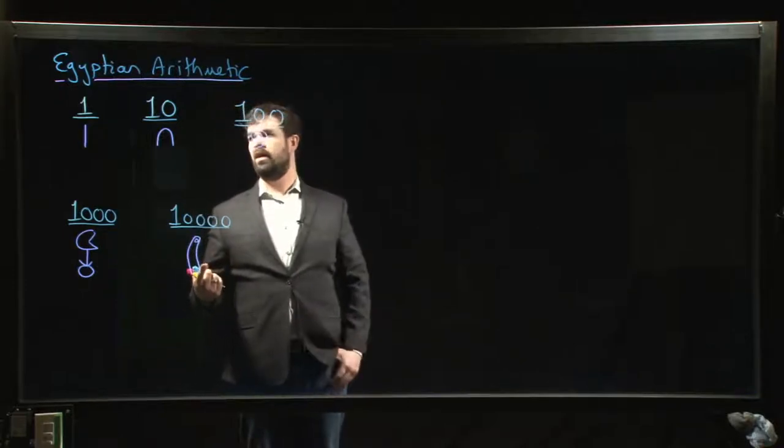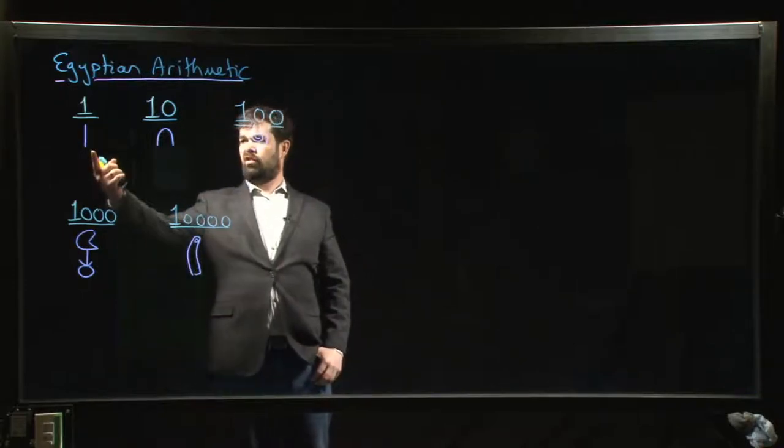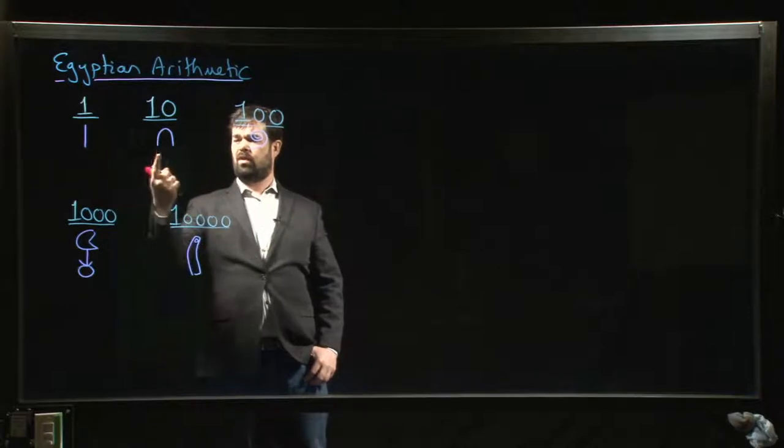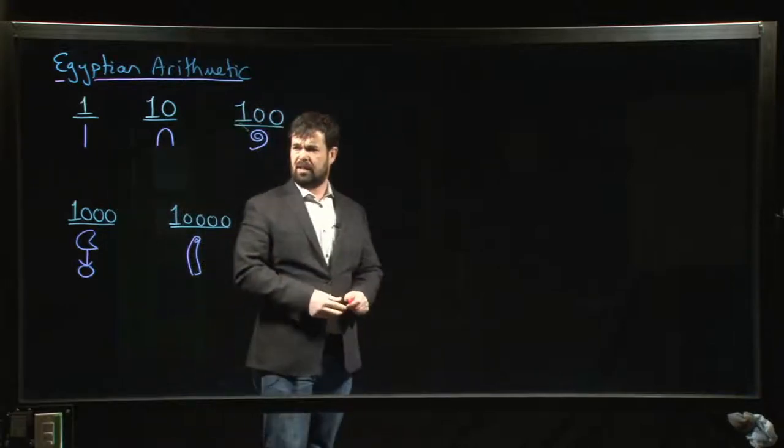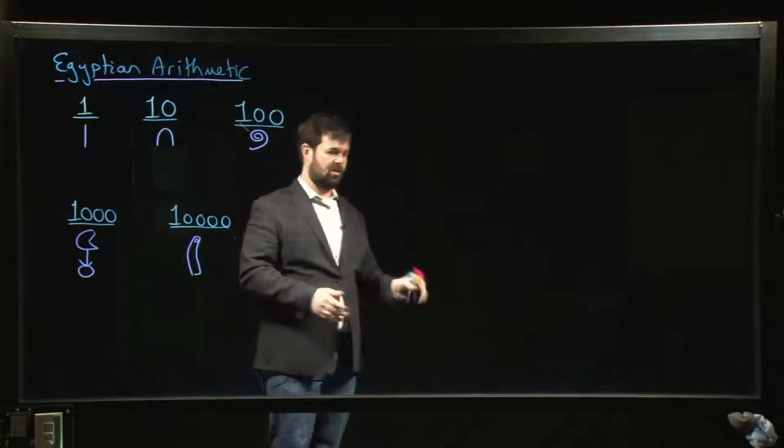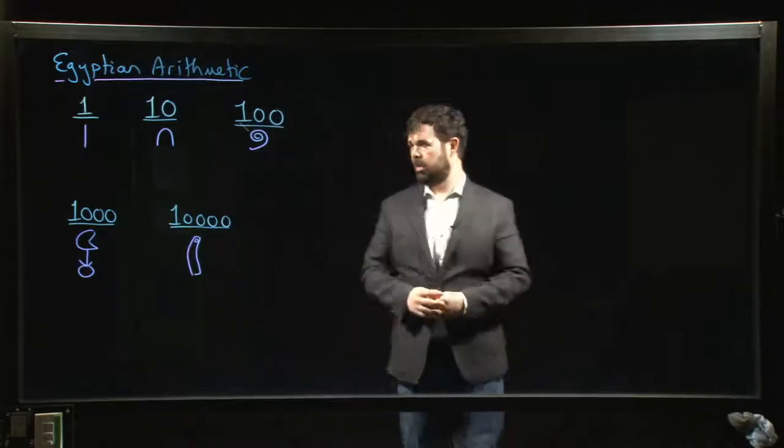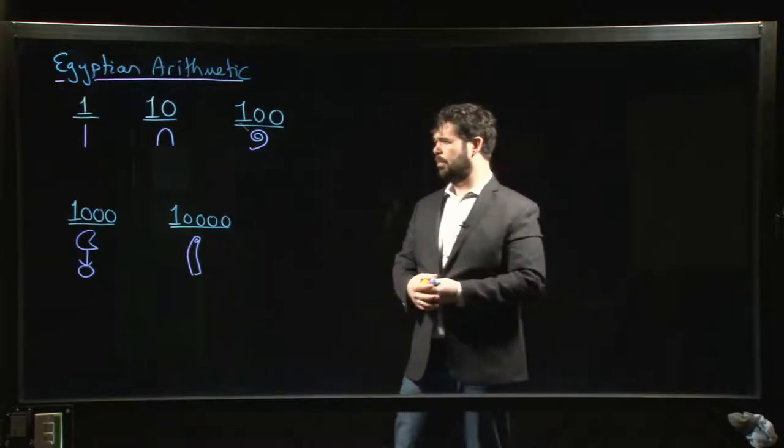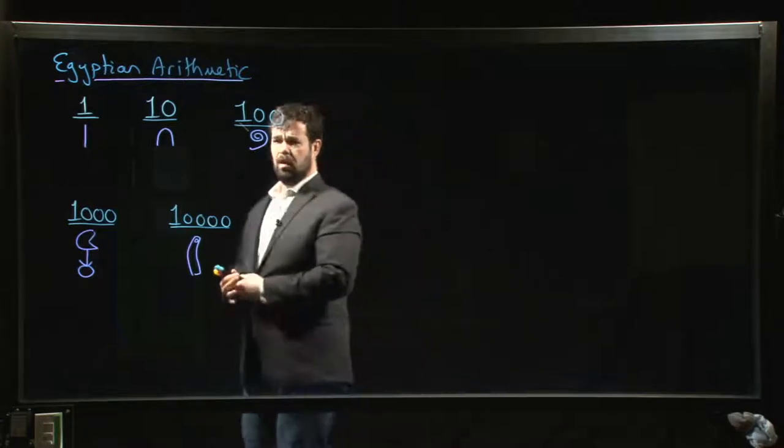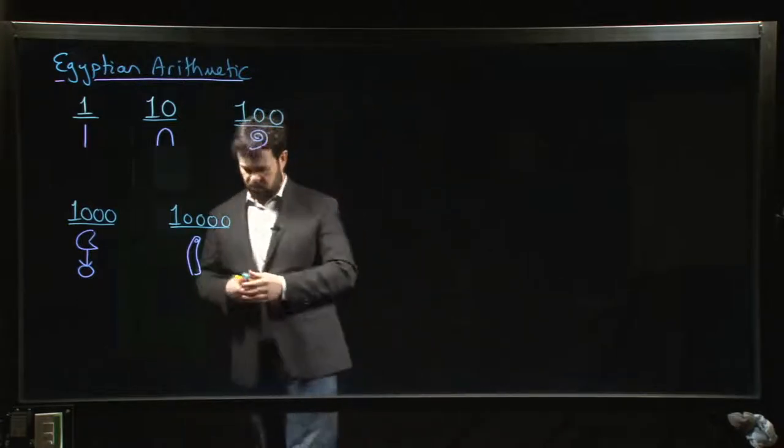A thousand is a lotus flower. Ten thousand is a bent finger. One is just a staff or a stroke. This is called a cattle hobble, something used to make it hard for a cow to walk, although I've heard other people say it's a heel bone. A hundred is supposed to be a coil of rope.